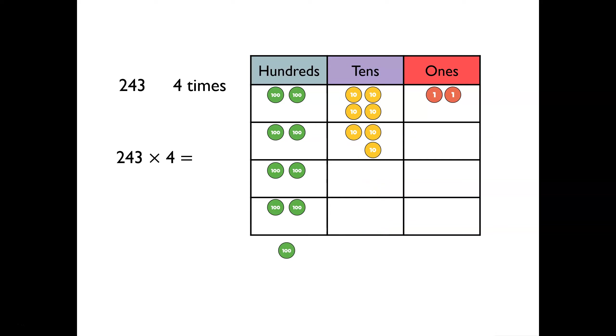Moving to the next place value, I can see there is no need to exchange hundreds, because there is only 9. I would need 10 hundreds to make an exchange. So looking back now on the place value grid, I can see I have 2 ones, 7 tens and 9 hundreds. 243 multiplied by 4 is equal to 972.